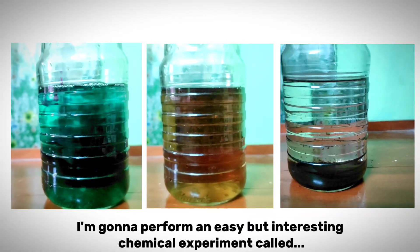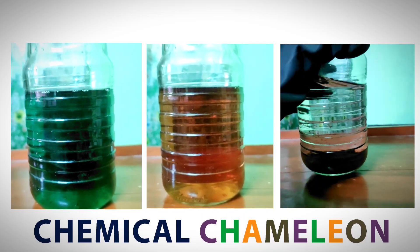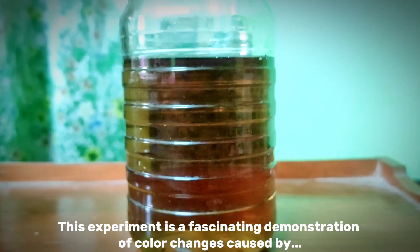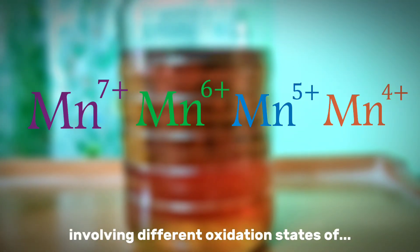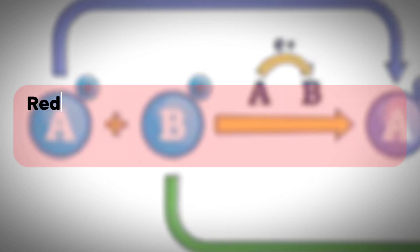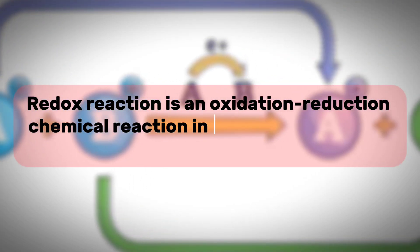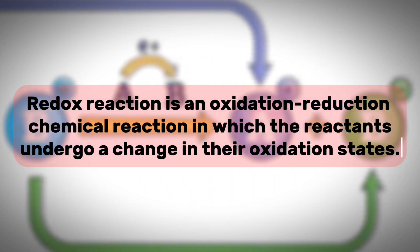Today, I'm going to perform an easy but interesting chemical experiment called chemical chameleon. This experiment is a fascinating demonstration of color changes caused by redox reactions involving different oxidation states of manganese. Now the question comes, what is a redox reaction? Redox reaction is an oxidation-reduction chemical reaction in which the reactants undergo a change in their oxidation states.